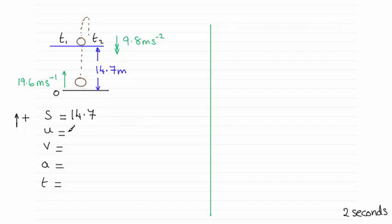u, the initial velocity, is going to be 19.6 in the positive sense. v, we don't know what v is going to be, so we'll just leave that out.